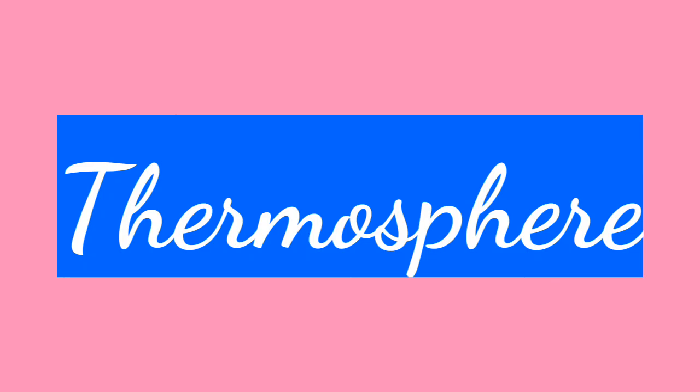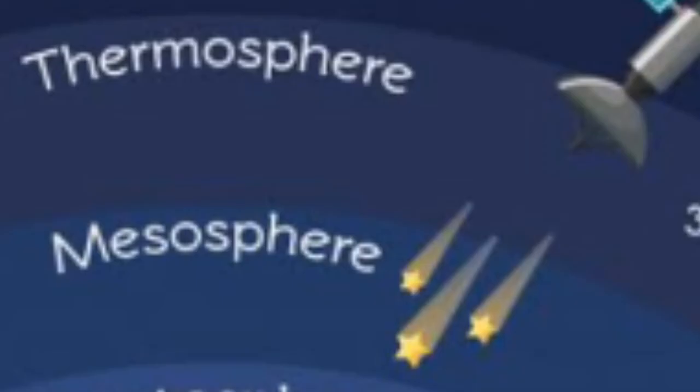Next is thermosphere. This is the fourth layer of the atmosphere. Space shuttles move in this layer. Jo hum satellites wagera bhejte hai, woh isi layer mein ghoomte hai. This layer helps in the transmission of radio and television — jo television aur radio hum sun aur dekh sakte hai, that is because of this thermosphere layer.